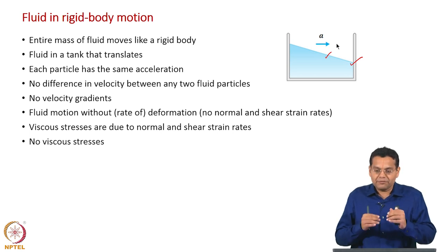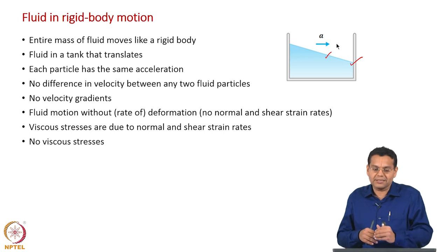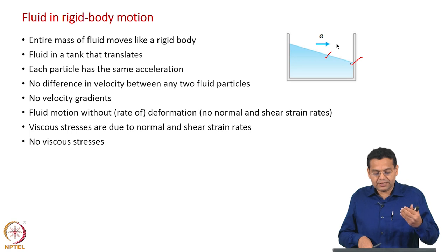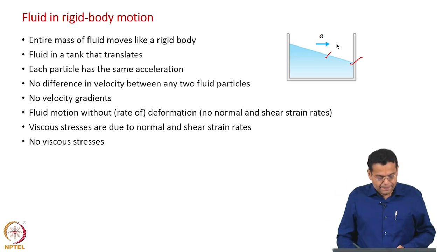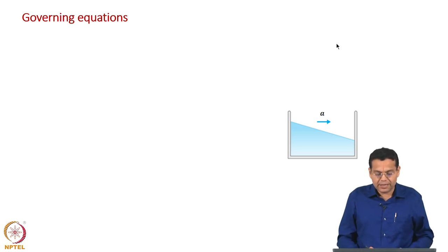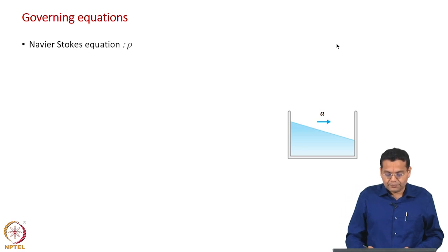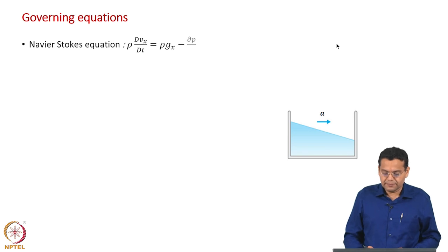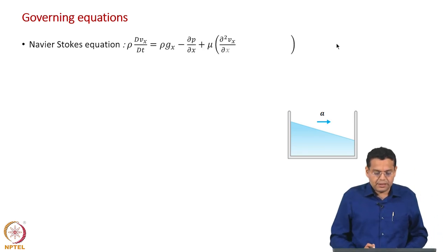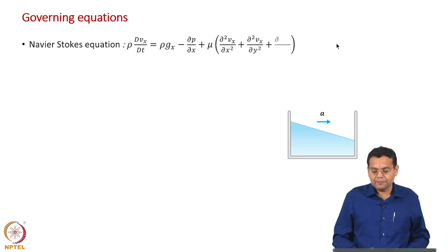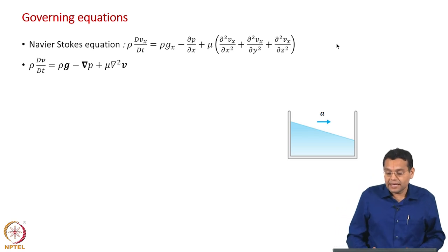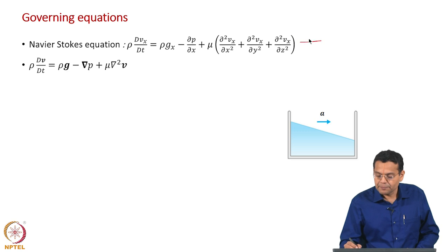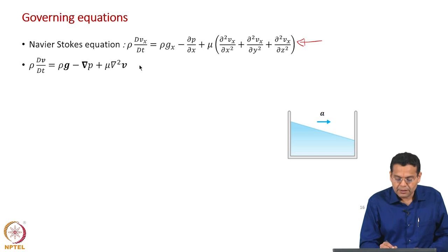The first level of applications are where there are no viscous stresses: one in which the fluid is not moving at all, and one in which the fluid is moving like a rigid body. Now let us discuss the governing equations. We write the Navier-Stokes equation in terms of the substantial derivative on the left-hand side, and body forces and surface forces on the right-hand side.